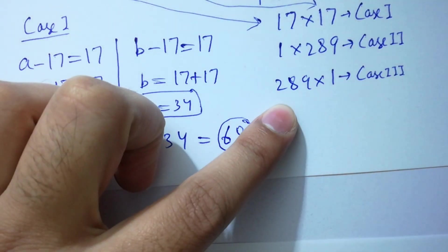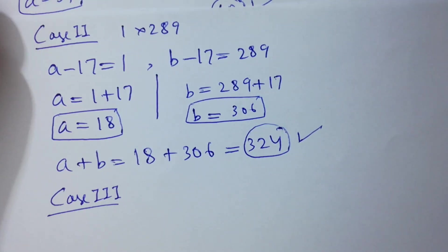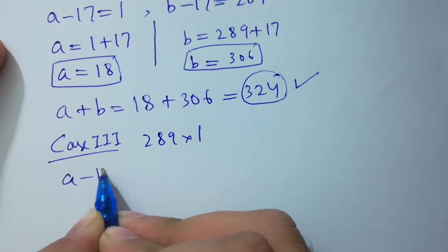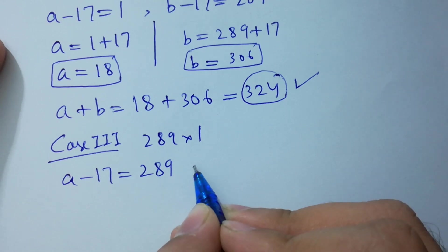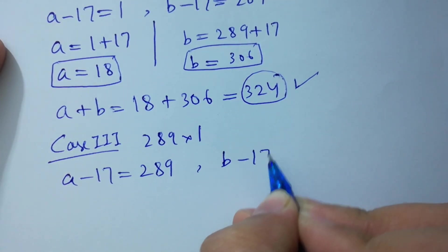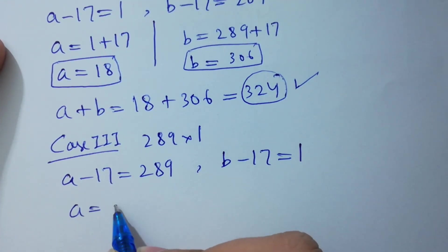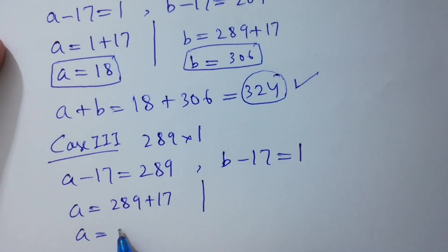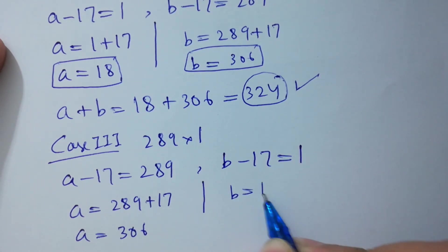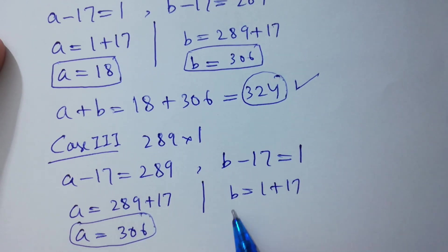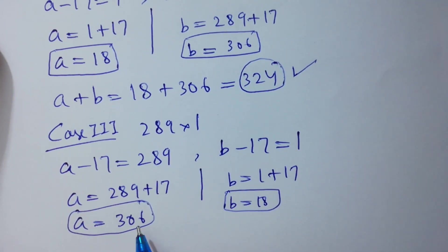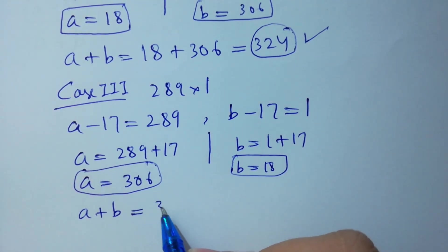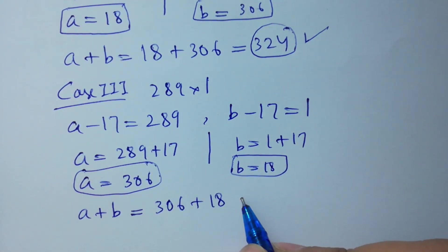Case 3 is 289 times 1. So a minus 17 equals 289 and b minus 17 equals 1, giving a equals 289 plus 17 equals 306 and b equals 1 plus 17 equals 18. So a plus b equals 306 plus 18, which is 324.